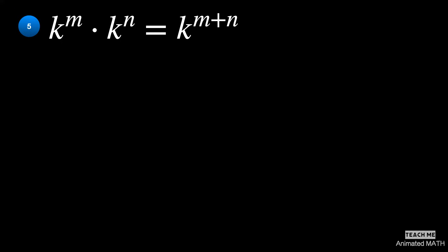The fifth property. Given k^m times k^n, how many times do you have to multiply k by itself? First, multiply m times.